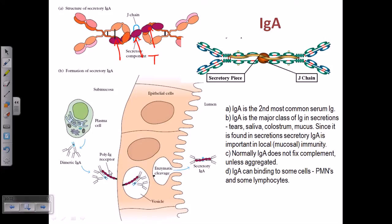The dimeric IgA binds to the poly Ig receptor and is internalized by receptor-mediated endocytosis. Enzymes are then released and cleave the complex. The two IgA molecules, J chain, and the poly Ig receptor come out together as a dimer structure. The poly Ig receptor that was on the surface of the epithelial cell is now converted and called the secretory component or T component.